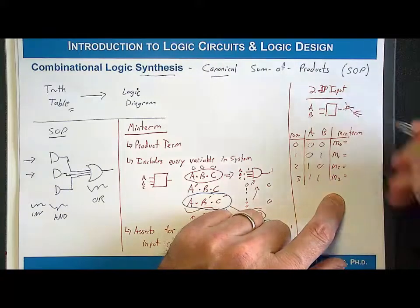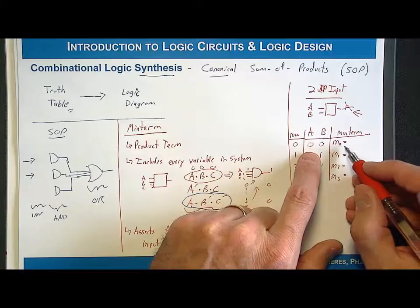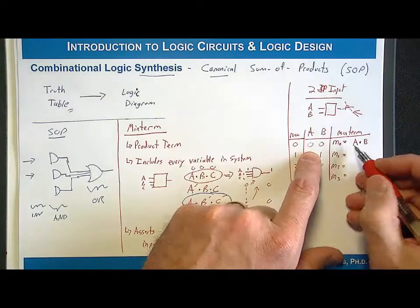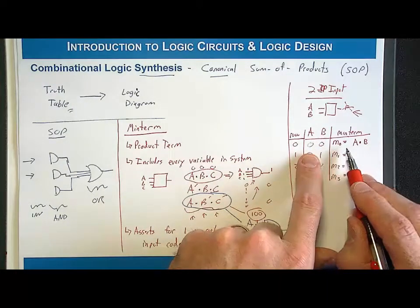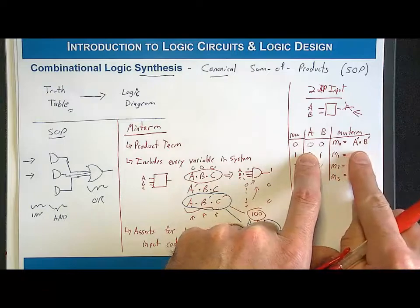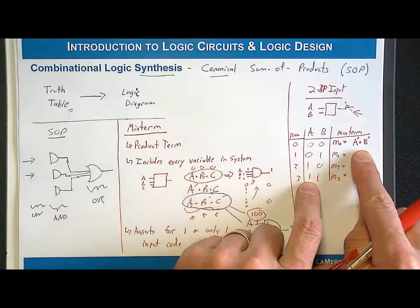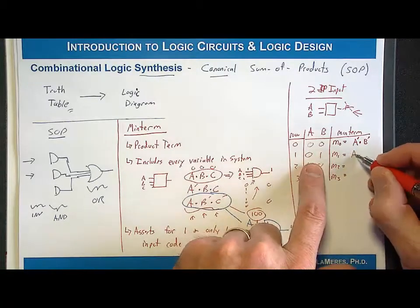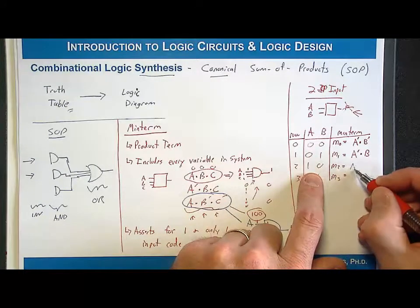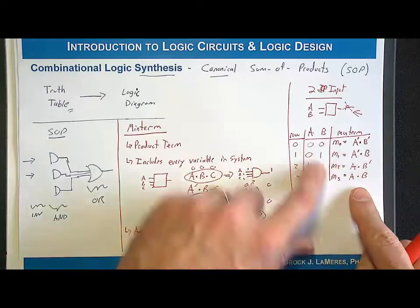For row 0 with A=0, B=0, we write a product term including every input variable with inversions to assert only for code 0,0: that gives us A̅·B̅. For m1 with code 0,1: A̅·B. For m2 with code 1,0: A·B̅. And finally m3 with code 1,1: A·B. Those are the min terms for each of the different rows.